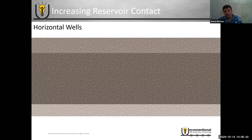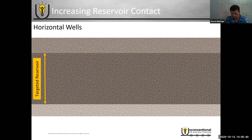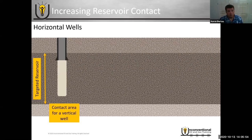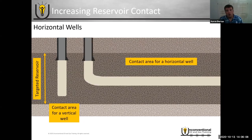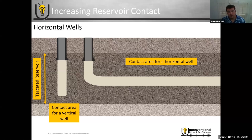The main objective with these types of reservoirs is increasing your reservoir contact area. In the U.S., most of these reservoirs range from 10 to 20 feet thick up to about 500 feet. Theoretically, you can put a vertical well in that target reservoir, but you could instead drill it horizontally and significantly increase the contact area — a 500-foot vertical well versus a 5,000, 10,000, or even 15,000-foot horizontal well really increases contact significantly.